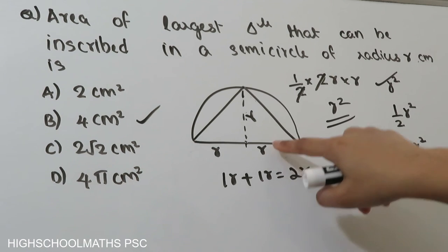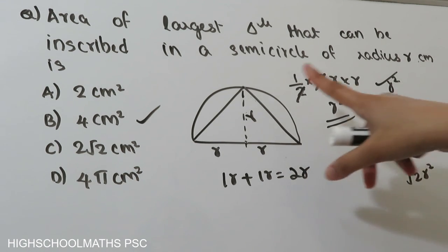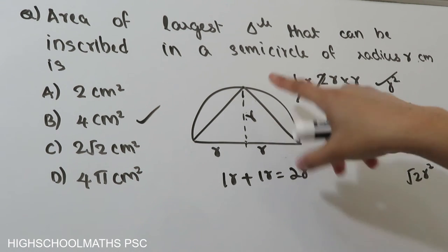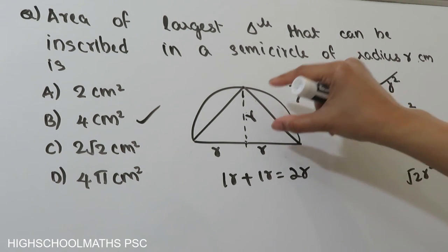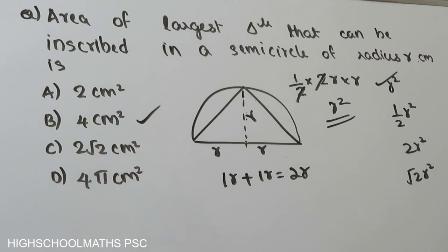If the radius is 2, then this is 4 centimeters squared. This is the largest triangle. The answer is option B: 4 centimeters square.